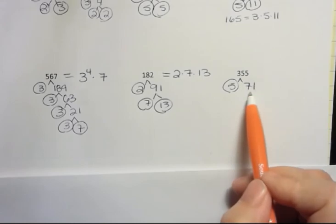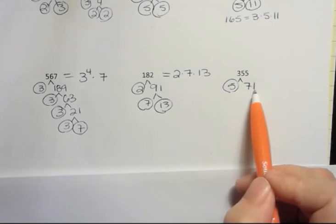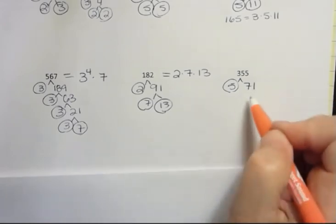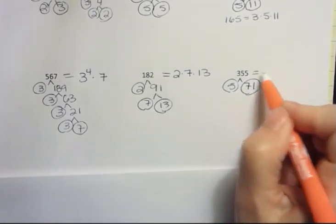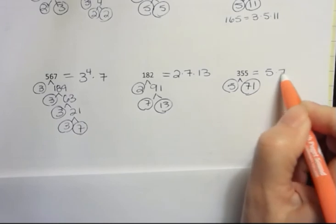6, 8, 10, all those are out. 7 goes into 70, so it doesn't go into 71. 9? Nope. 11? No. And now I'm bigger than I can possibly get. So that's it. My prime factorization is going to be 5 times 71.